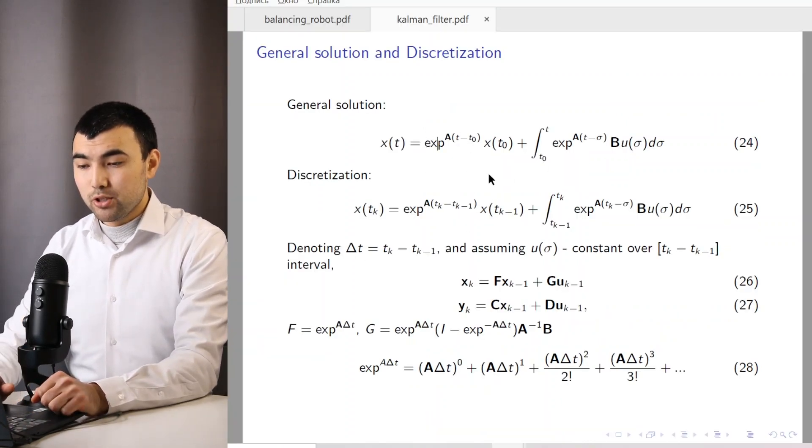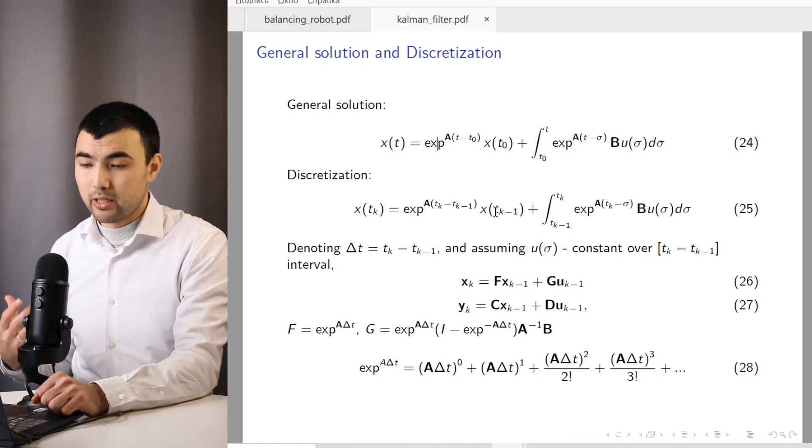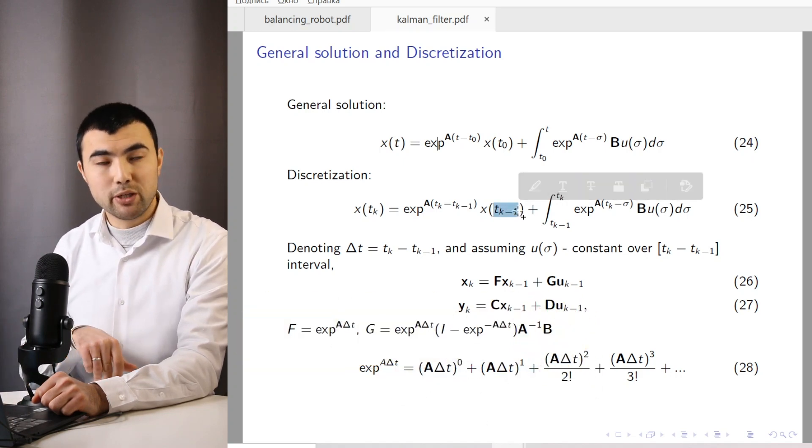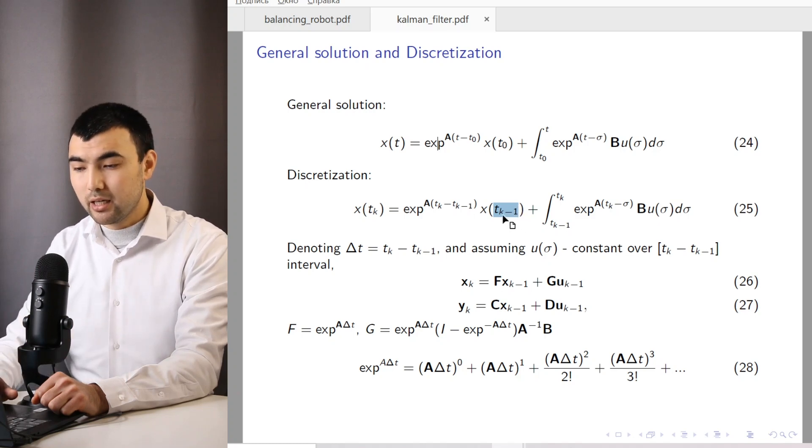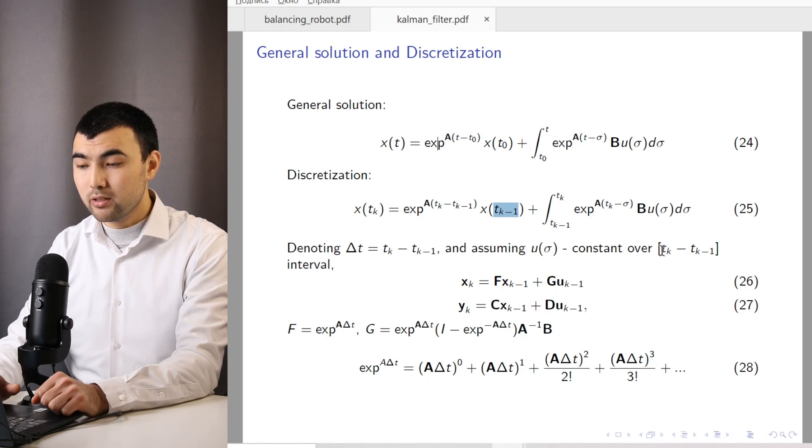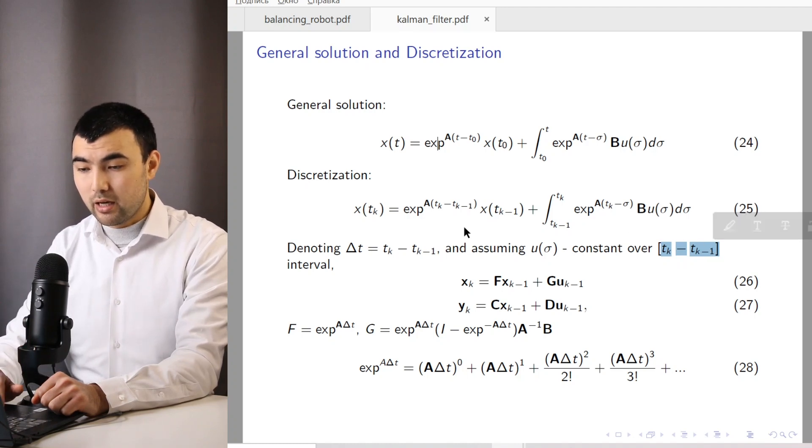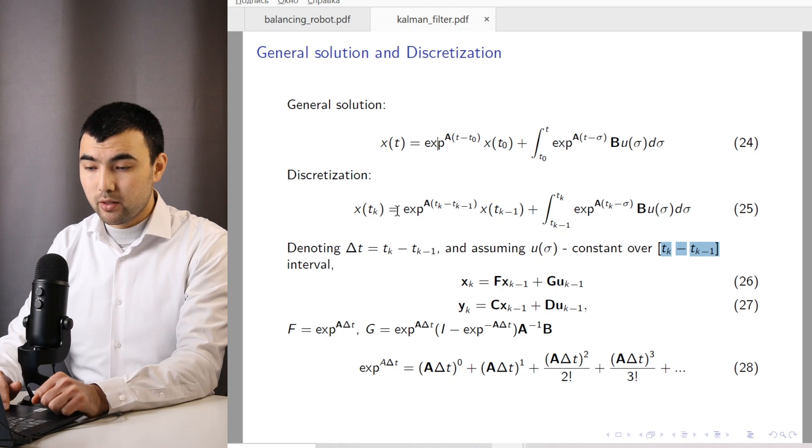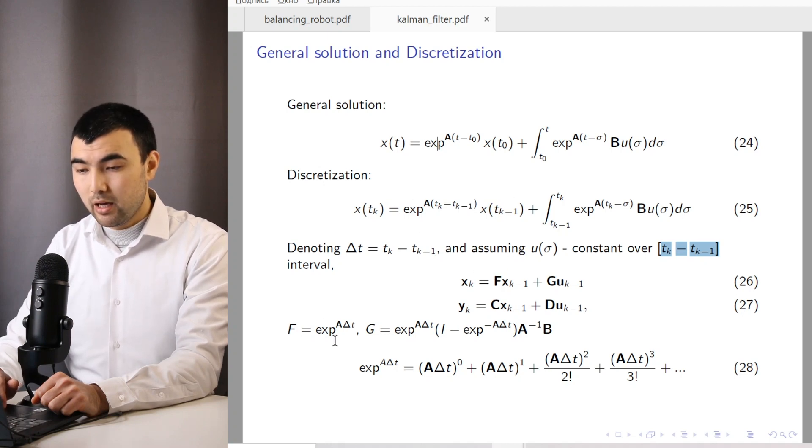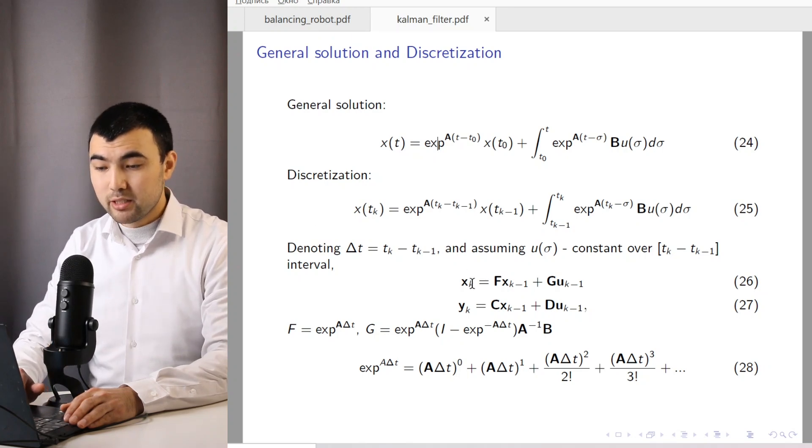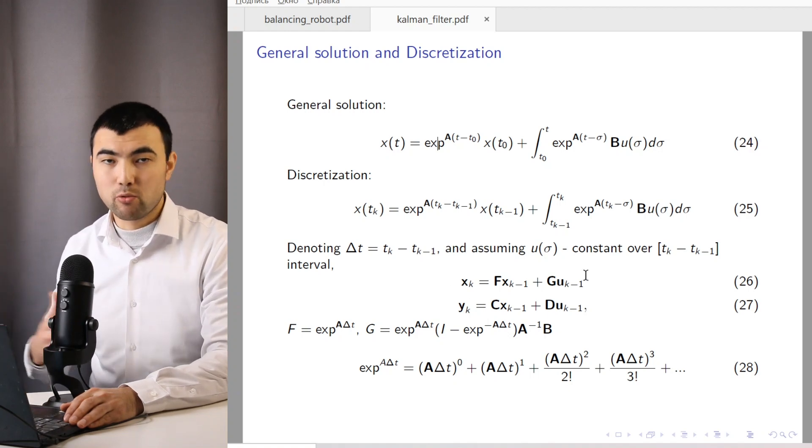So using this general solution, we can extract the discrete form of this equation. So instead of t0, we substitute the state variables for the previous, for the last time frame, t(k-1). And we assume that input is constant in this time range, which is true when working in digital systems. So using these assumptions, we can extract the digital form of this equation. So we denote this expression as F matrix, as you see, and this expression is equal to G matrix. So finally, we obtained the discrete, the recursive form of the state-space equations. So we can implement these equations inside the microcontroller or any digital system.